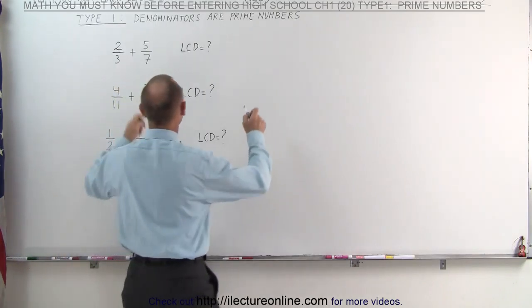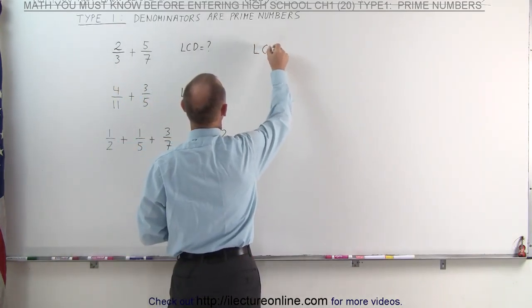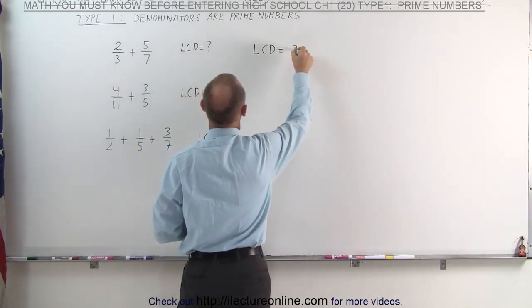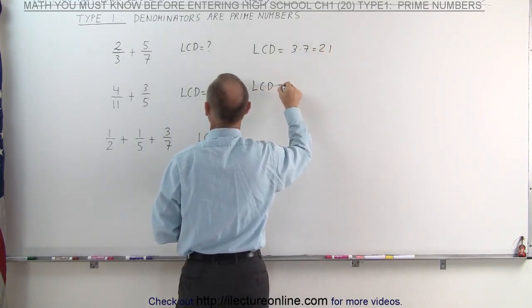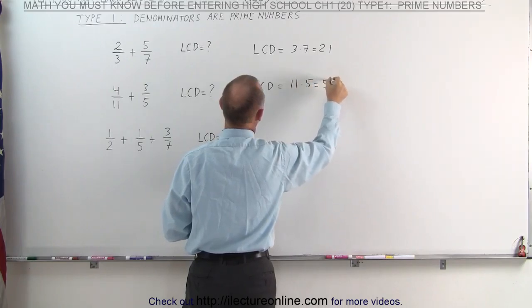That's our only option. So in this case, the lowest common denominator is simply equal to 3 times 7, which is 21. In this case, the LCD is equal to 11 times 5, which is 55.